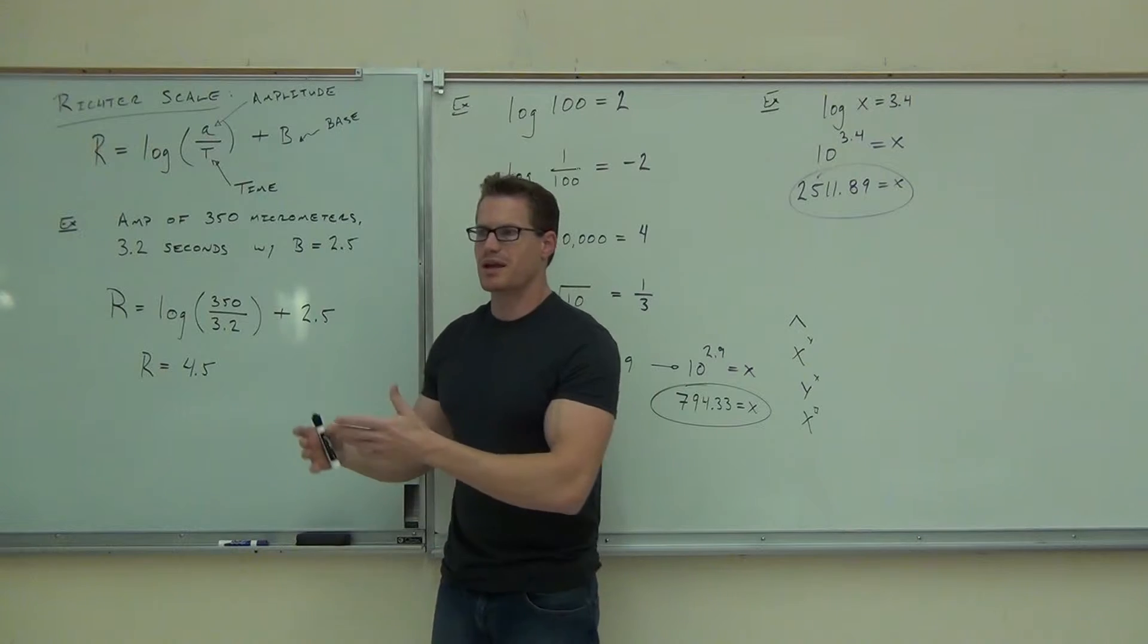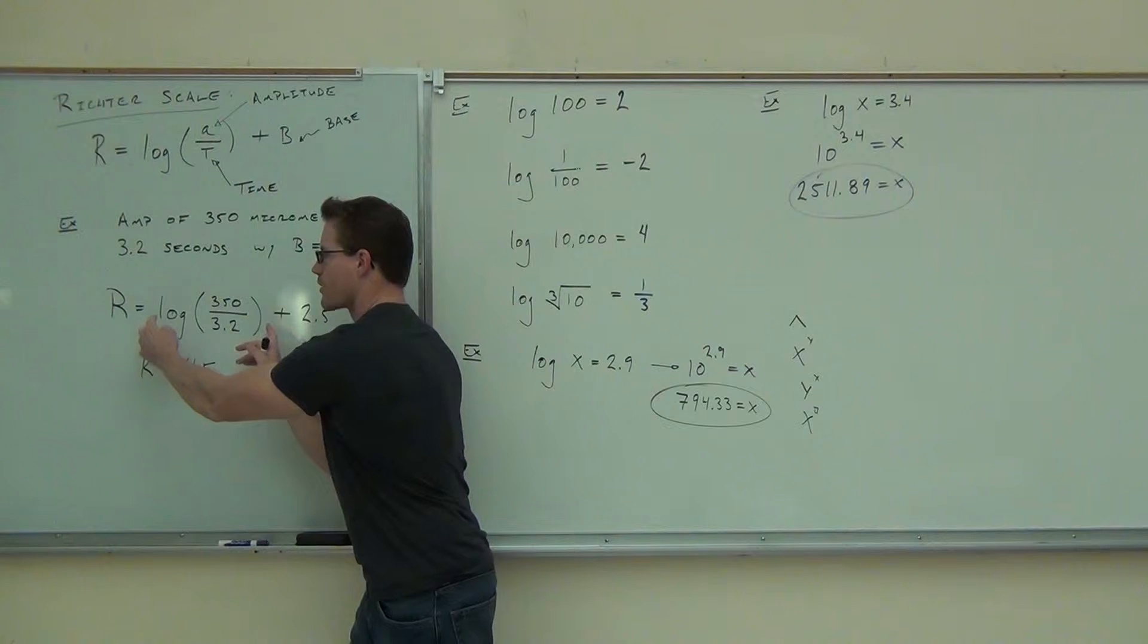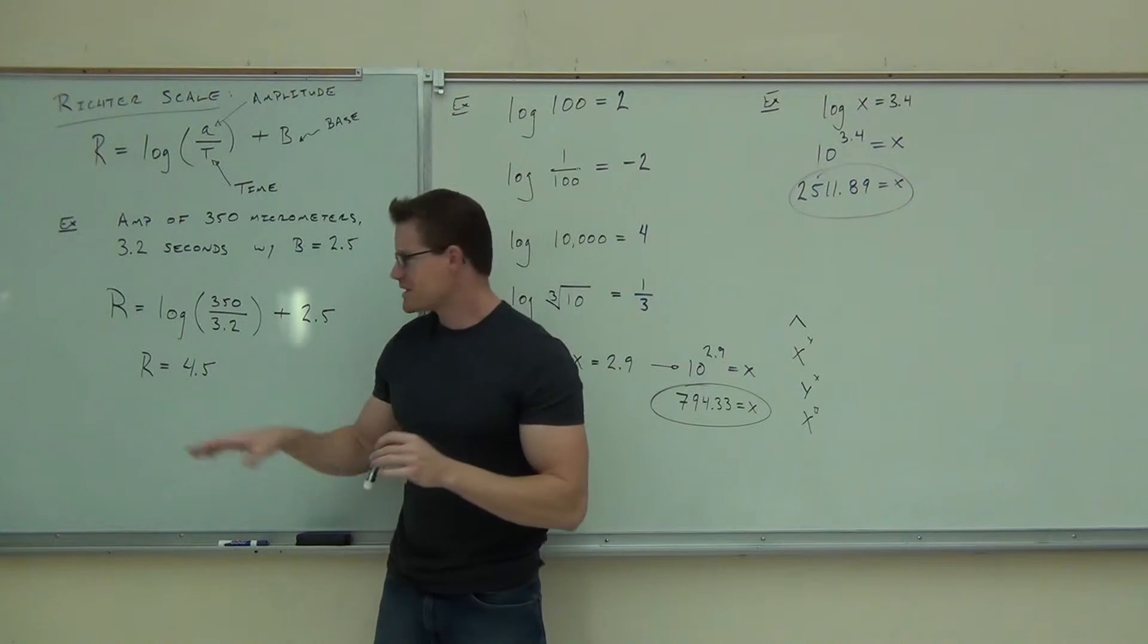Now, why? What's the thing here? I need you to understand what exactly you just found. Okay, look at the board here real quick. Notice that when you calculate a logarithm, what you're actually doing is calculating an exponent. What's the base of this logarithm?